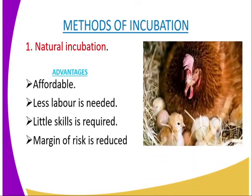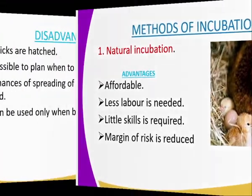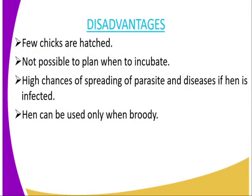You can see an image of a hen sitting on the eggs, and some of the eggs have already started to hatch into chicks. Now we come to the disadvantages of this method. First, few chicks are hatched because the bird can only sit on a maximum of 15 eggs, meaning the number of chicks hatched is few. Second, large-scale production is not possible because the bird used must be broody.